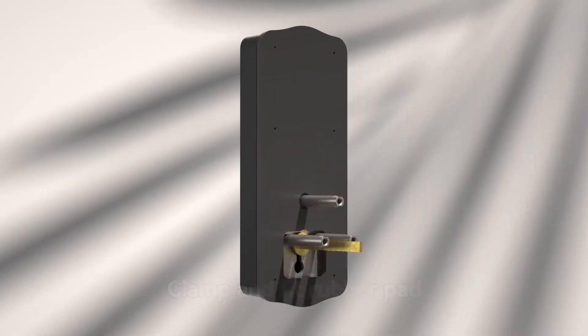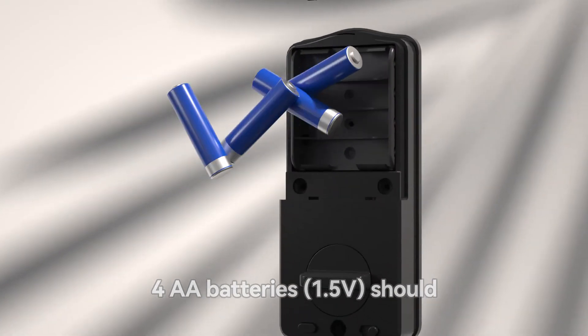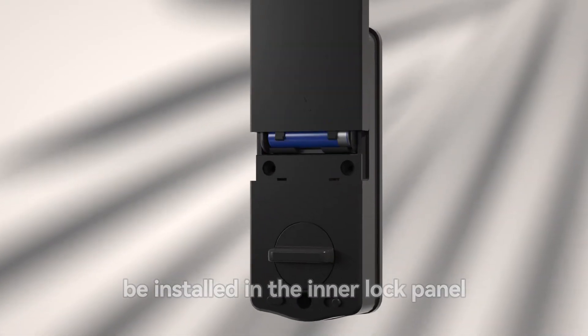Clamp and fit rubber pad. Install 4 AA batteries, 1.5 volts, in the inner lock panel.